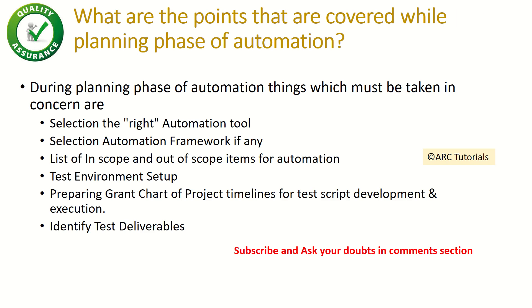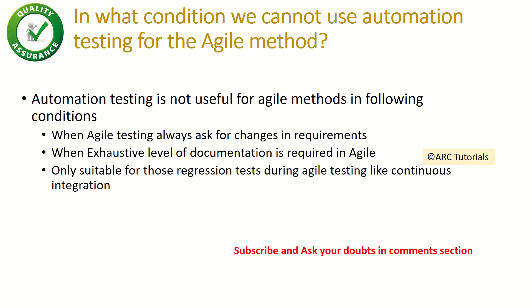The next question is: what points are covered during the planning phase of automation? During the planning phase, there are important steps to carefully evaluate so you don't waste time. The first important thing is selecting the right automation tool; second is selecting the correct automation framework. Then identify what is in scope and out of scope for automation, set up your test environment and test data, prepare delivery timelines for your test scripts, and finally identify and deliver the test suites.